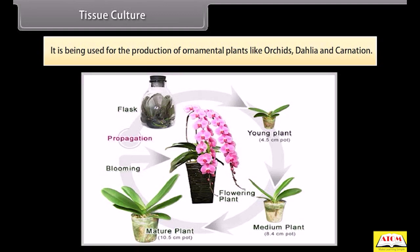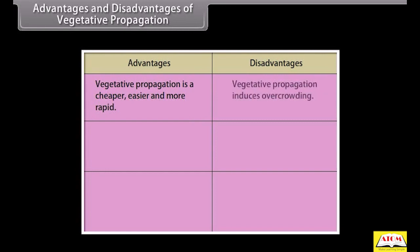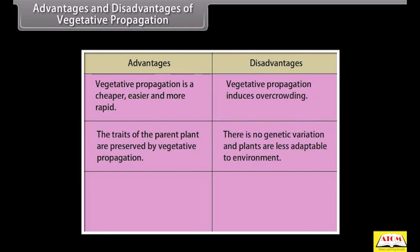Tissue culture is being used for the production of ornamental plants like orchids, dahlia, and carnation, as well as for the production of disease-free plants.